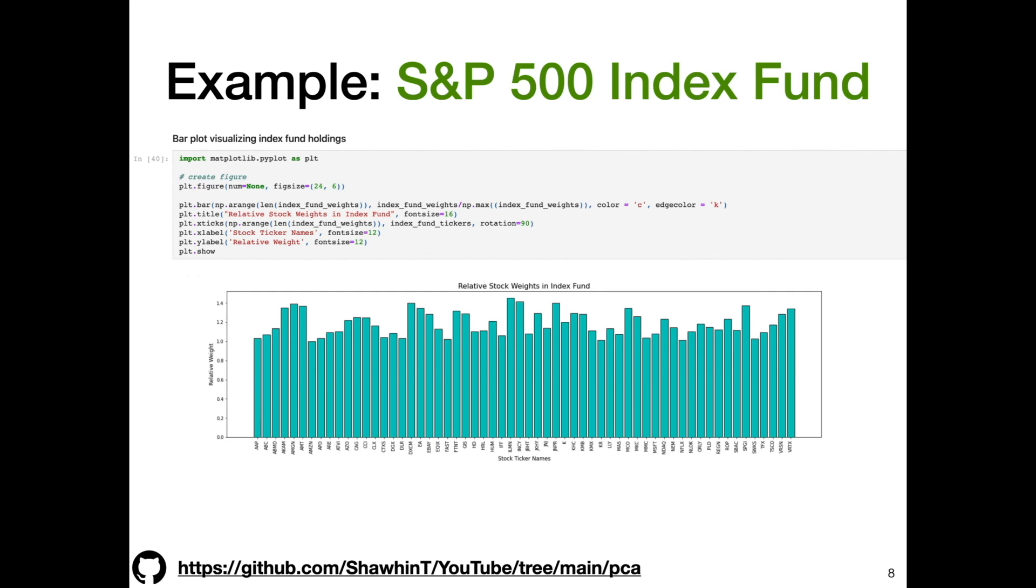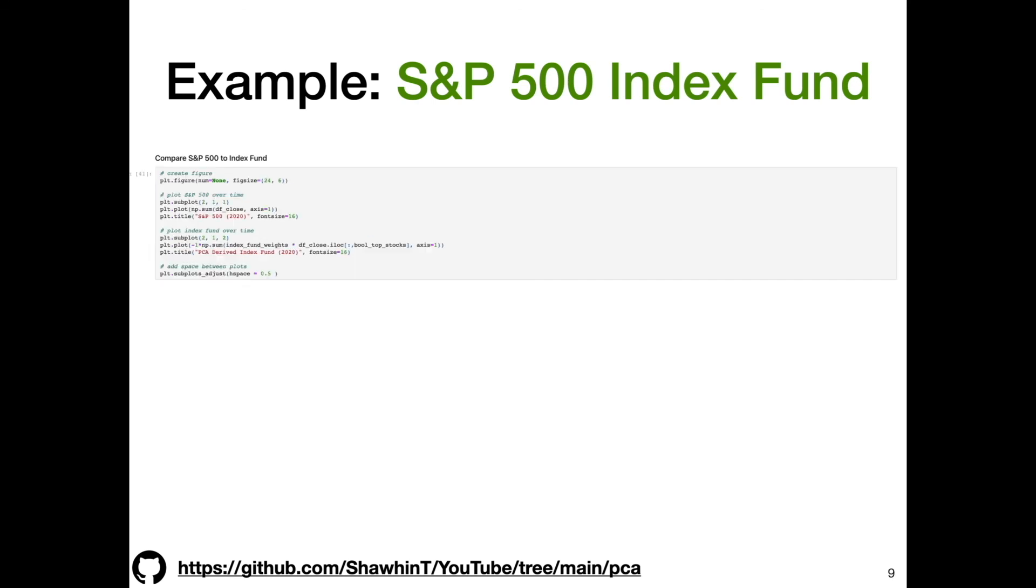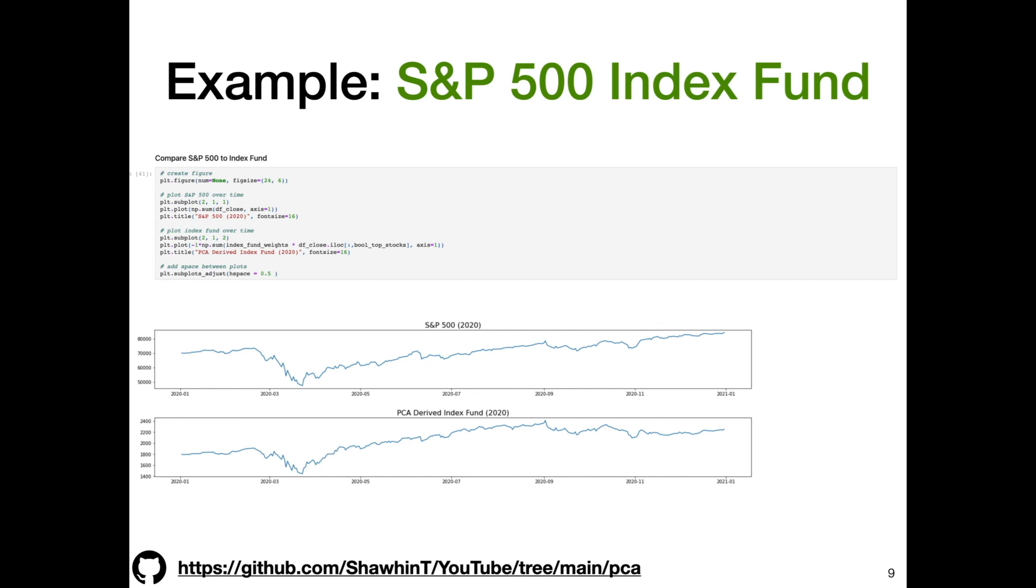Then we can see how our index fund compares to the actual S&P 500 over 2020. Visually, it doesn't do such a bad job—there's some discrepancies along the way, but everyone cares about percent return. If you would have just bought one share of every single stock in the S&P 500 at the beginning of 2020 and then sold those same shares at the beginning of 2021, you would have made 20% return. If you would have instead followed the investing strategy of this particular index fund derived from PCA, you would have made 25%.